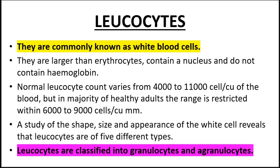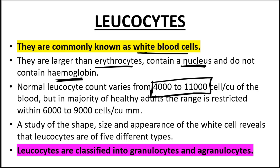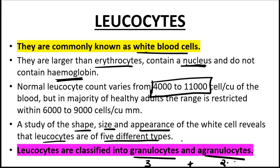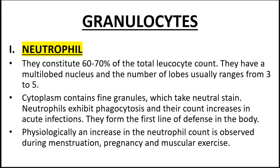Now let's look at leukocytes — white blood cells. They are larger than erythrocytes, they contain a nucleus — remember erythrocytes do not contain a nucleus — and they do not contain hemoglobin. The normal leukocyte count is between 4,000 to 11,000 cells, with the majority ranging between 6,000 to 9,000. Leukocytes are of five different types: granulocytes and agranulocytes. The first granulocyte we'll look at is the neutrophil, which is the most abundant leukocyte.